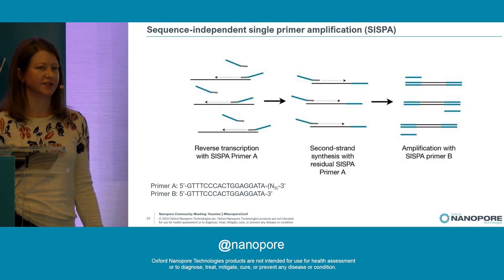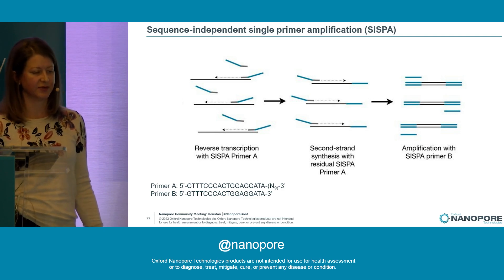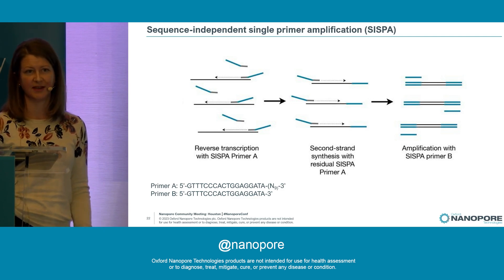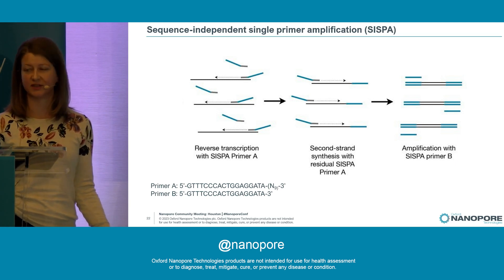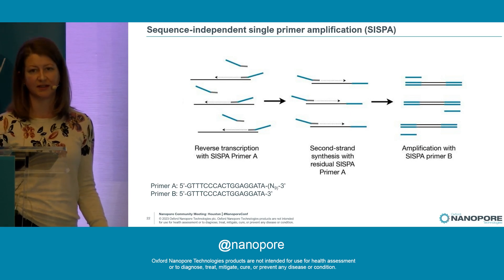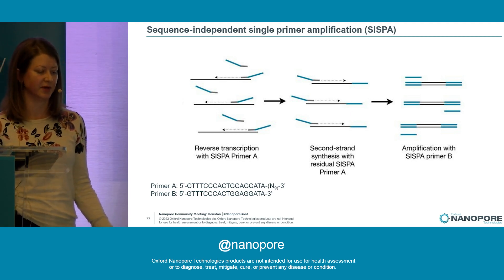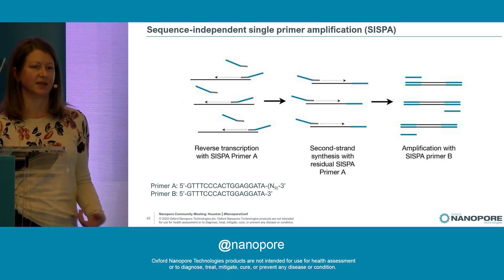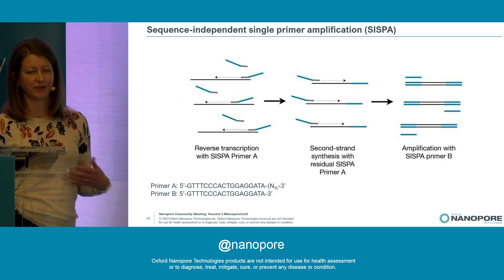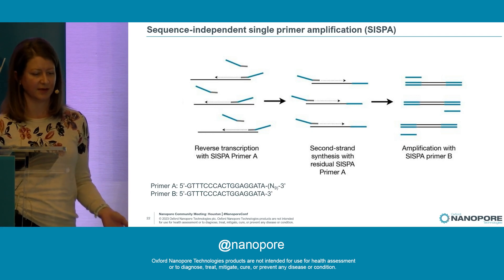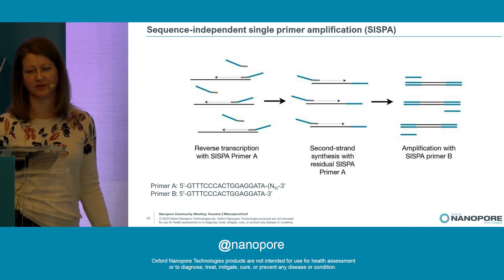One of the first strategies we've been using in our lab for unbiased sequencing in air samples is sequence-independent single primer amplification, or SISPA. It does have its downsides because it's less sensitive than targeted methods. But the way we use it is with a primer that has a random nanomer on the end, which undergoes binding with the RNA in our samples. Then we generate cDNA, and then we amplify that cDNA before pushing it into sequencing.